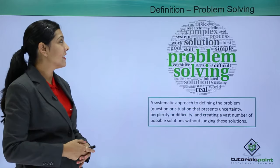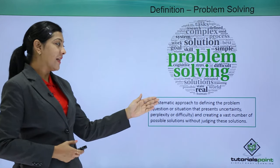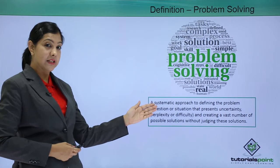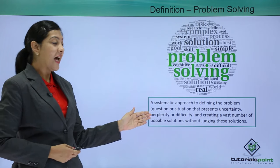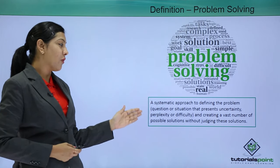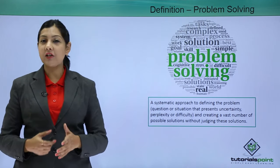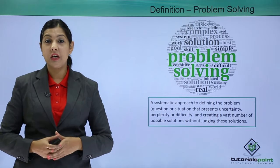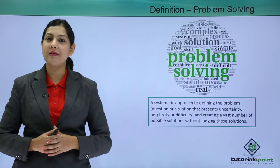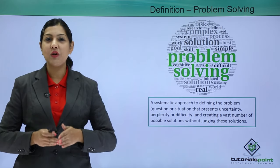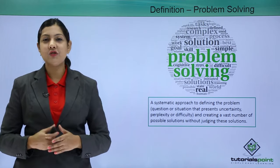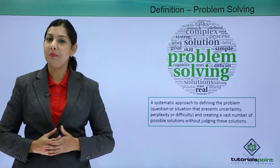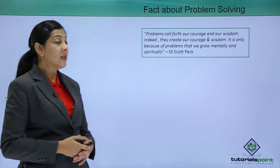If we have to formally define a problem, it means a systematic approach to defining the problem — some question or situation that presents uncertainty, perplexity, or difficulty — and creating a vast number of possible solutions without actually judging those solutions. In simple terms, a problem is a doubt or a difficult situation which requires a particular solution. Today we will discuss certain strategies and steps on how we can help solve problems in a better manner.